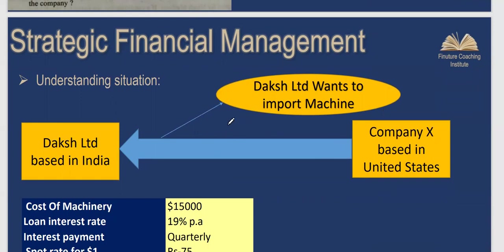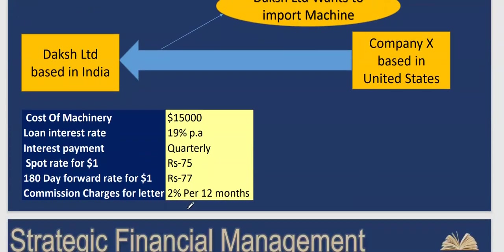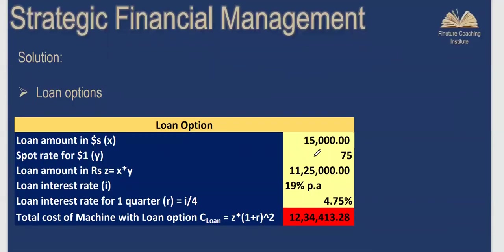In summary, the company wants to import machinery from a seller in the United States at a cost of $15,000. For Option A: 19% per annum quarterly compounding, spot rate, six-month forward rate, and commission charges. For the loan option: the loan amount is $15,000. Converting at the spot rate gives ₹11,25,000. Borrowing ₹11,25,000 at 19% per annum quarterly compounding gives a quarterly interest rate of 4.75%.